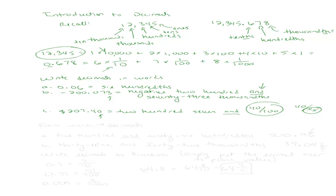Just as we can go from decimals to words, we can go backwards — from words to standard decimal form. Say we have five hundred and ninety-six hundredths. What's before the decimal point? Five hundred. The 'and' translates to a decimal point. Then ninety-six hundredths — we can just write ninety-six, because the last digit is already in the hundredths place.